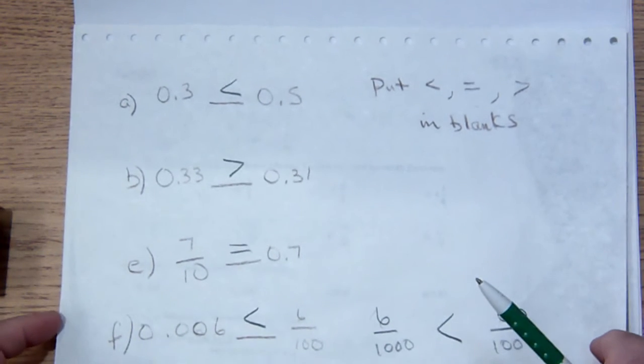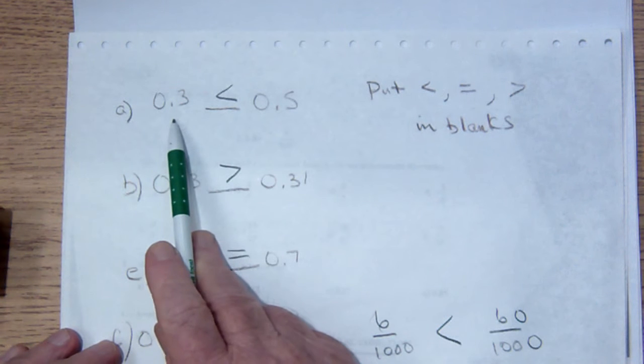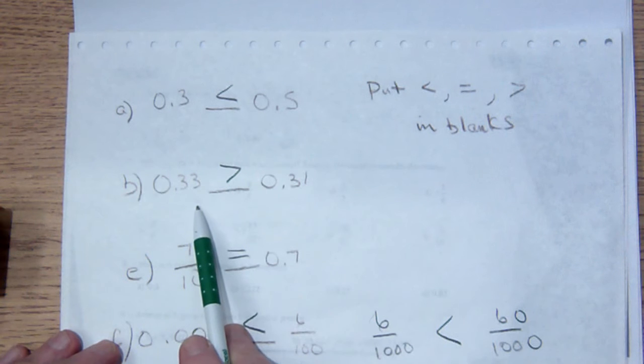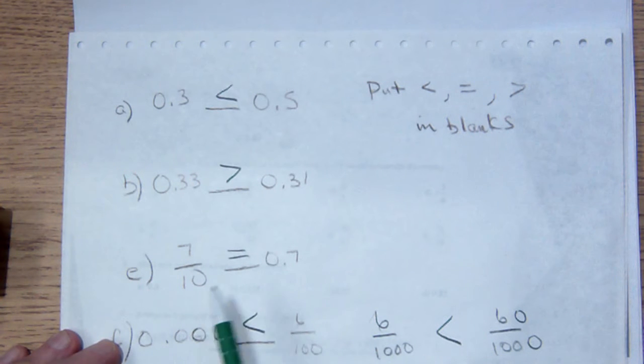I can look at these and declare that 3 tenths is less than 5 tenths, 33 hundredths is bigger than 31 hundredths.